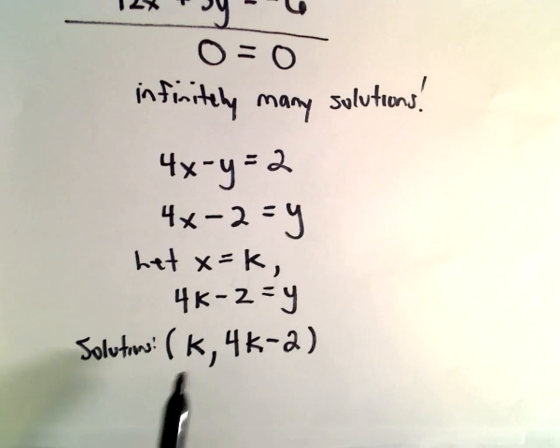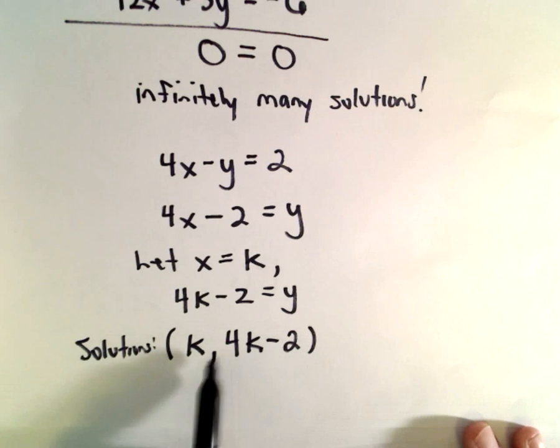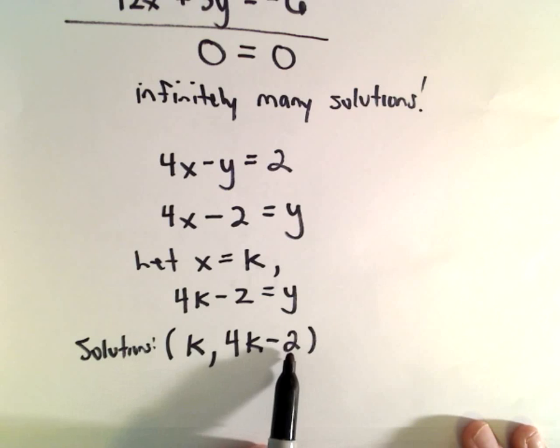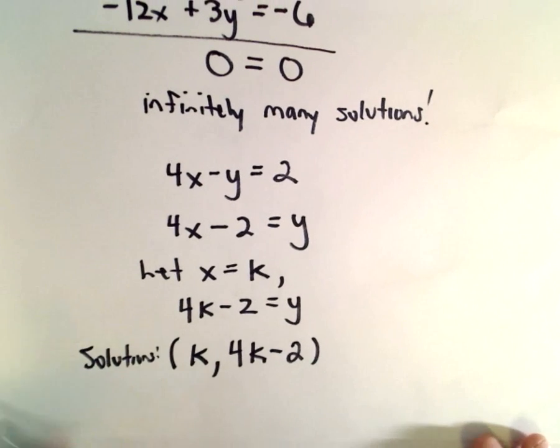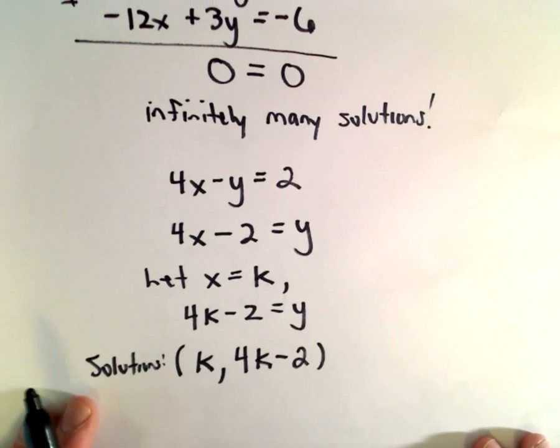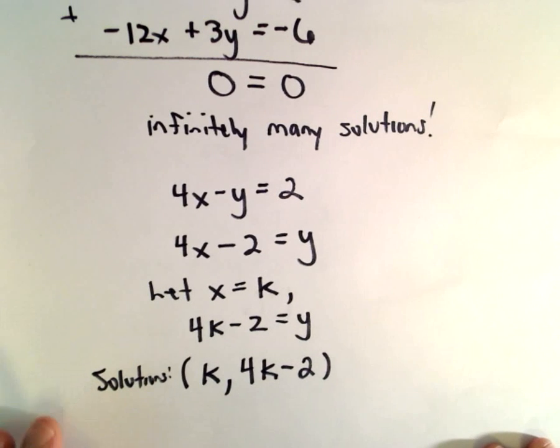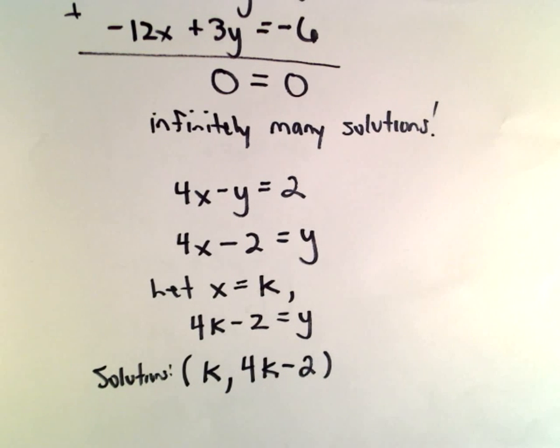So the idea is pick your favorite value for x, and then do 4 times that number minus 2, that'll give you the y value, and that's the way that you can actually find specific pairs of numbers that satisfy the original system of equations.